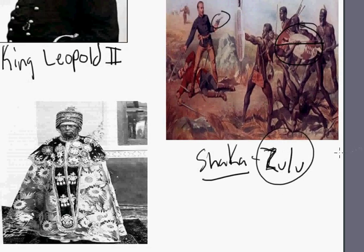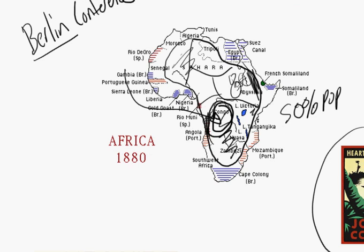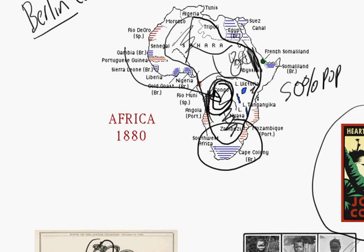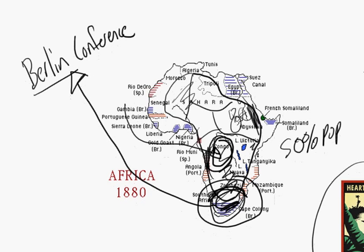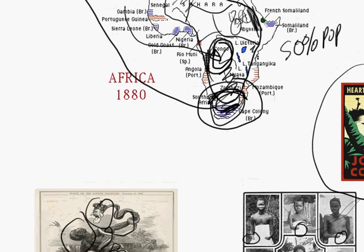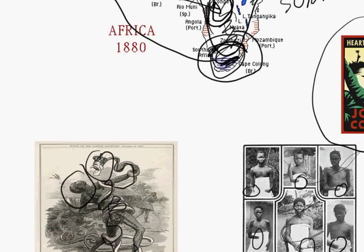Another example of what was going on was the Boer War in southern Africa. You had the Boers, who were Dutch settlers, fighting over land with the British. This is an example of Europeans fighting each other, which goes against the spirit of the Berlin Conference. The British won — it was a very bloody war. Tens of thousands of Boers were put into concentration camps, basically labor camps, because the British didn't know who the enemy was among the Boer guerrilla fighters, so they locked them all up.